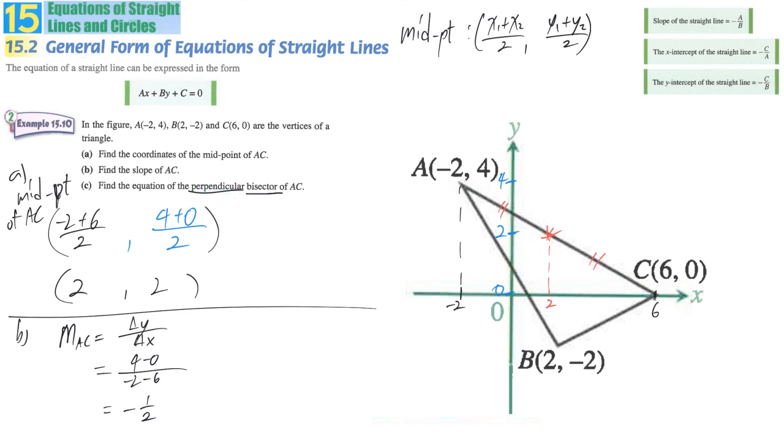So our target line is this dashed line here. Bisector and at the same time perpendicular.